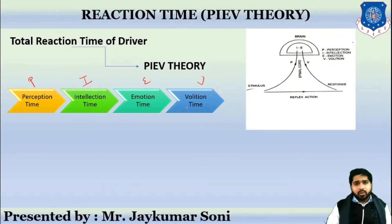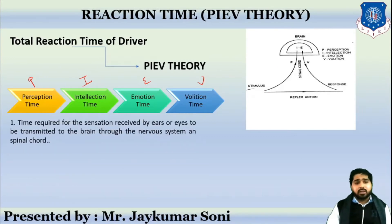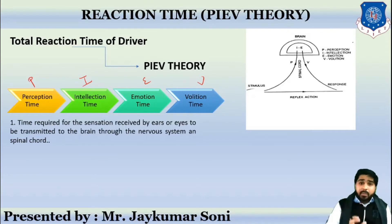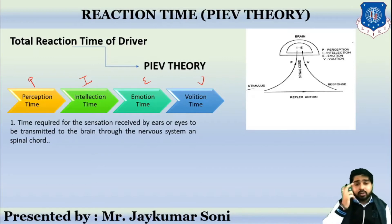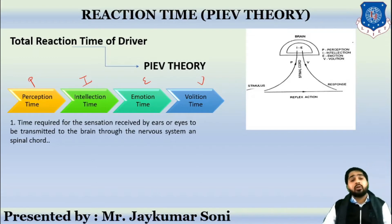Whenever you are driving and you see any obstruction on your way, your eyes will be the first sensory organ to visualize things. The sensory organ will sense the object and send signals to the brain through the nervous system. The time consumed in that operation is called perception time — that is, the time required for the sensation received by the eyes or ears to be transmitted to the brain through the nervous system.